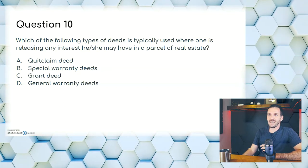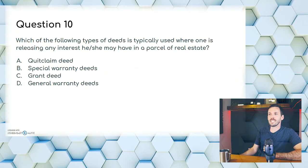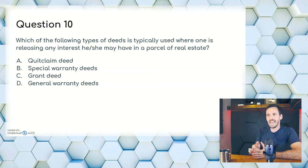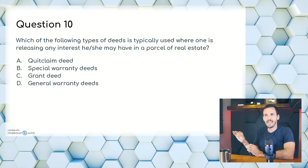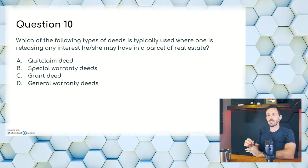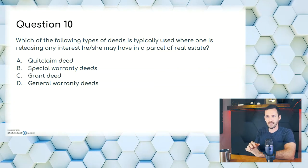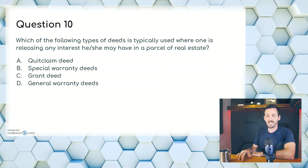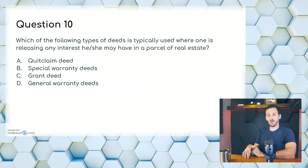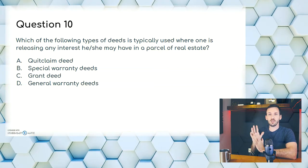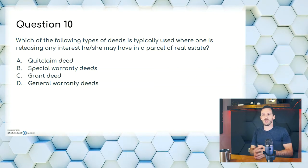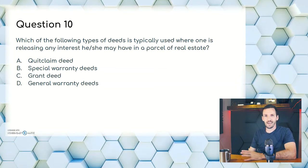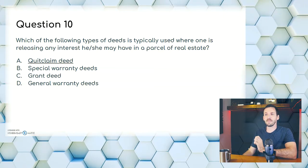Question ten: which of the following types of deeds is typically used where one is releasing any interest he or she may have in a parcel of real estate? A, quit claim deed; B, special warranty deed; C, grant deed; or D, general warranty deed. The warranty deeds are protections for the buyer. A quit claim deed transfers the interest of the grantor to the grantee. Answer is A, quit claim deed.